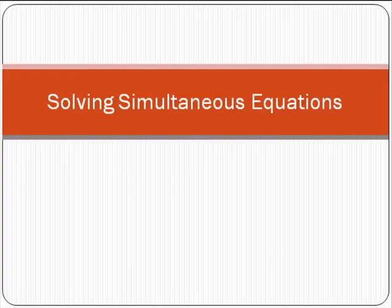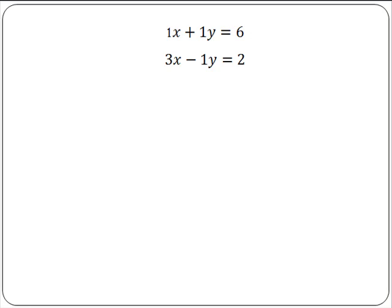Solving Simultaneous Equations. If we look at the following two equations, these are simultaneous equations. This means that the two unknowns are variables, so x and y have the same value in each equation. If we looked at each equation separately, there are many values for x and y which will satisfy the equation.